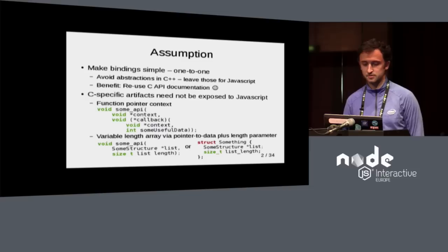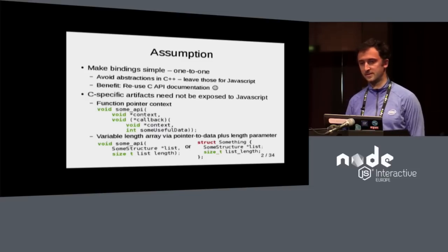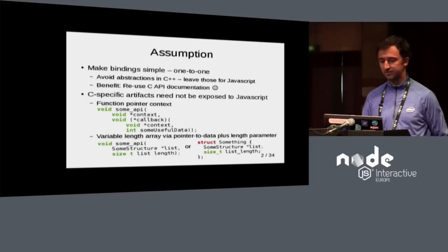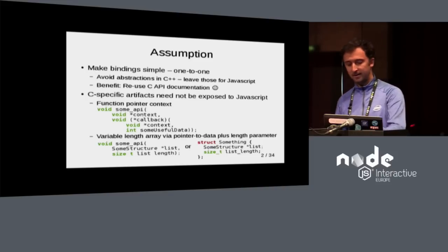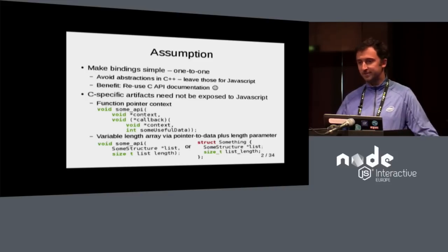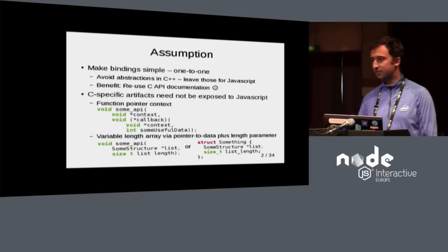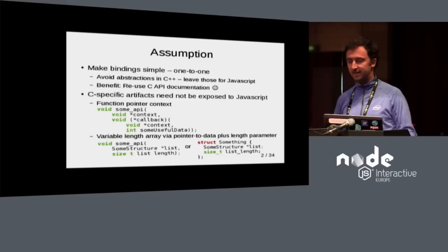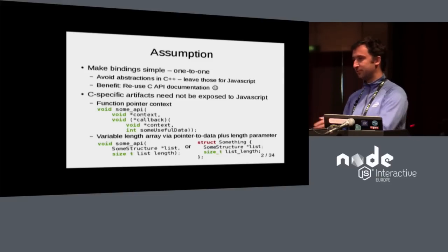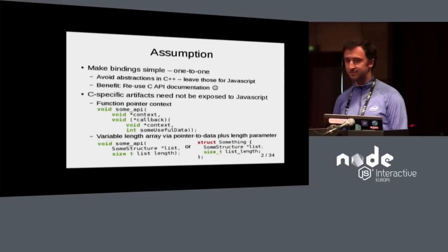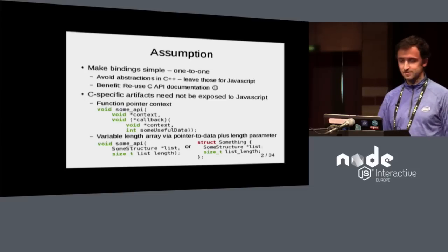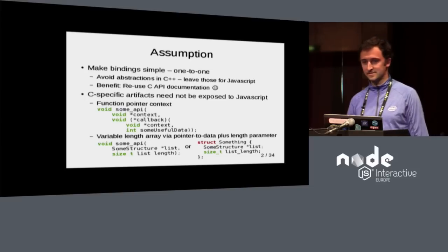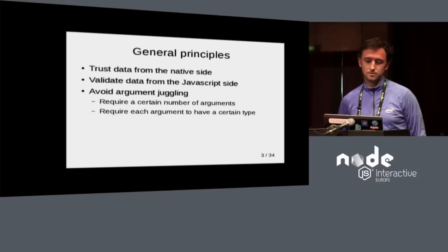Another thing you don't need to expose when writing a minimalist JavaScript API is variable-length arrays. C doesn't have them, so you always have two parameters: the array, which is just a chunk of data, and an integer saying if you read more than this, you're going to segfault. But in JavaScript the array length is always a member of the array, so you don't need to expose that either.